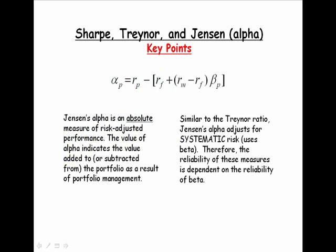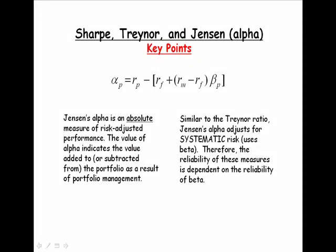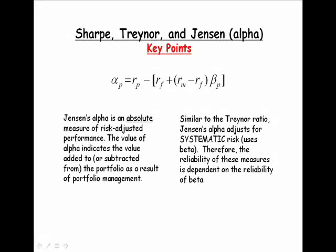Alpha is an absolute measure of portfolio performance. A positive value is good news — it implies that value was added to the portfolio return as a result of portfolio management. A negative alpha is not good news. Similar to the Treynor ratio, Jensen's Alpha uses systematic risk — it adjusts for systematic risk because it uses beta. Therefore, the reliability of both the alpha measure and the Treynor measure is really dependent upon the reliability of beta.